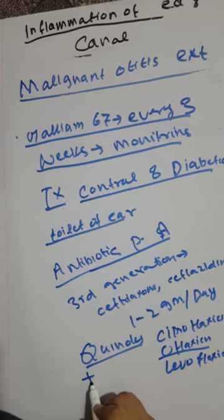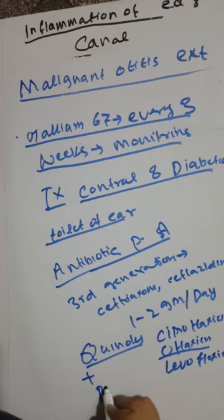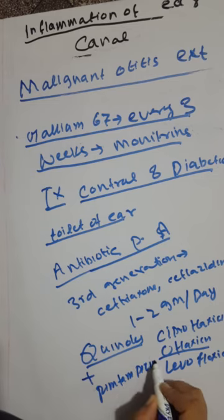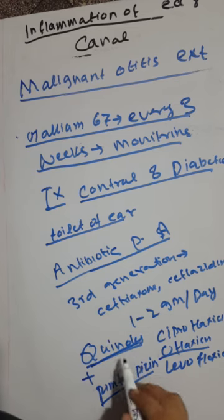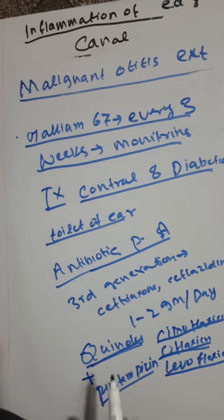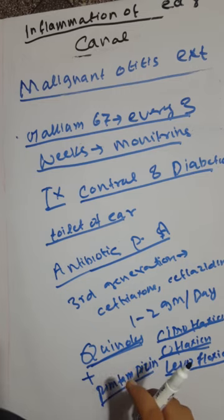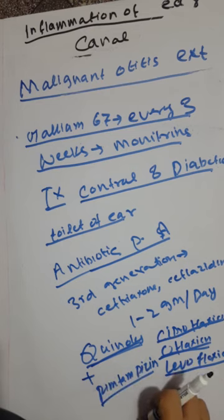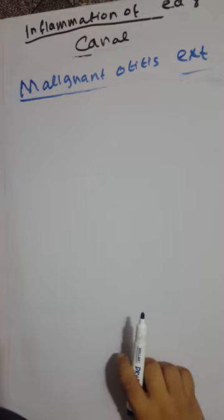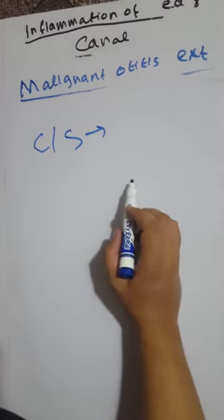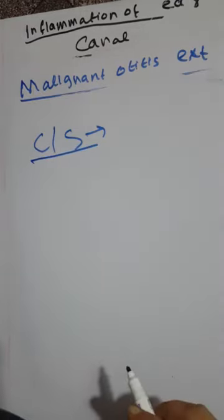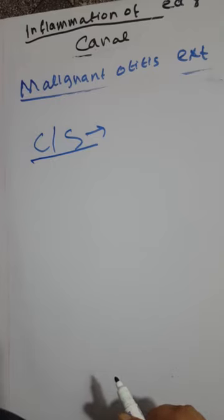In combination therapy, ciprofloxacin 750mg orally can be used along with rifampin. Other drugs such as gentamicin and aminoglycosides can be given intravenously but are ototoxic and nephrotoxic, so they are not the first drug of choice. If the patient does not respond, culture and sensitivity of ear discharge should guide the surgeon. Prolonged antibiotic treatment has replaced radical surgery for this condition.